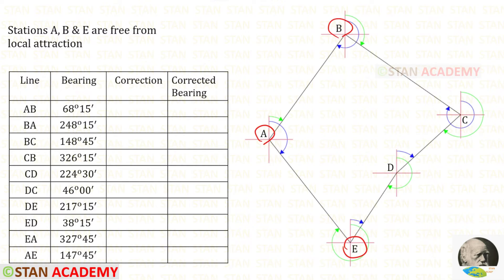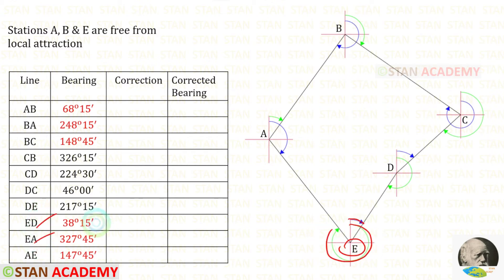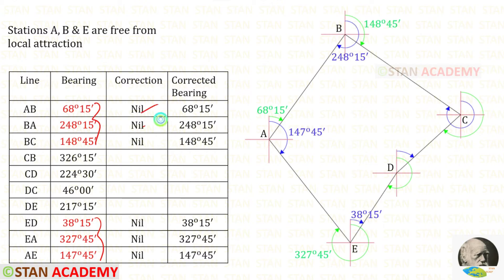Since stations A, B, and E are free from local attraction, the bearings taken from them are correct. From station A, bearings AB and AE are taken — both are correct. From station B, bearings BA and BC are taken — both are correct. From station E, bearings ED and EA are taken — both correct. For these six readings, no correction is required, so we can directly enter them as corrected bearings.